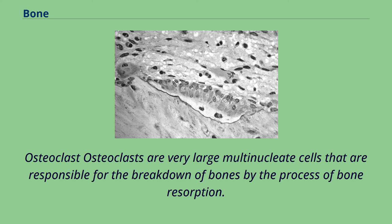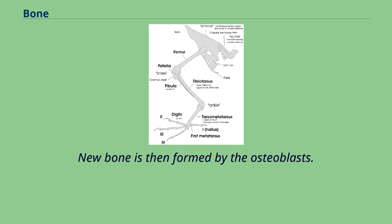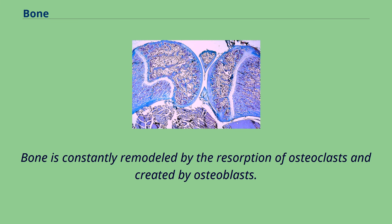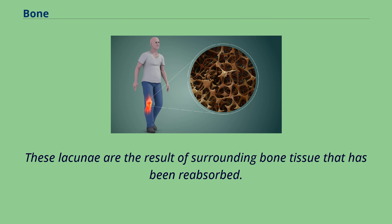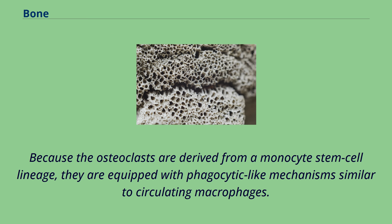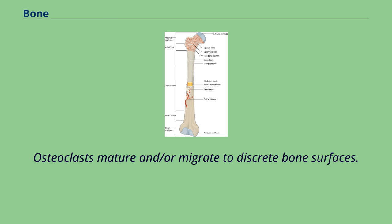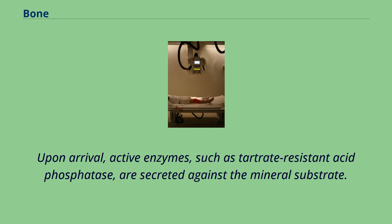Osteoclasts are very large multinucleate cells responsible for the breakdown of bones by the process of bone resorption. New bone is then formed by osteoblasts. Bone is constantly remodeled by the resorption of osteoclasts and created by osteoblasts. Osteoclasts are large cells with multiple nuclei located on bone surfaces in what are called Howship's lacunae, which are the result of surrounding bone tissue that has been reabsorbed. Because the osteoclasts are derived from a monocyte stem cell lineage, they are equipped with phagocytic-like mechanisms similar to circulating macrophages. Upon arrival at bone surfaces, active enzymes such as tartrate-resistant acid phosphatase are secreted against the mineral substrate.